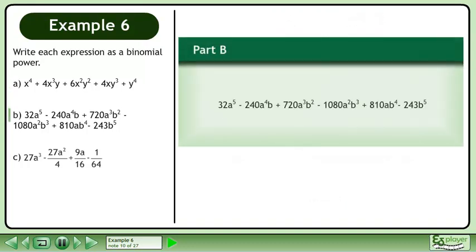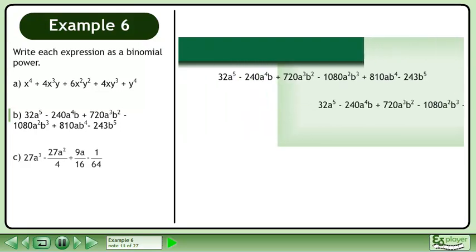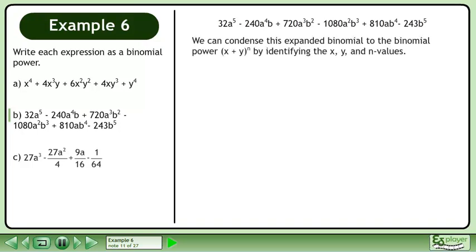In part B, write the expression shown as a binomial power. We can condense this expanded binomial to the binomial power x plus y raised to the power of n by identifying the x, y, and n values.